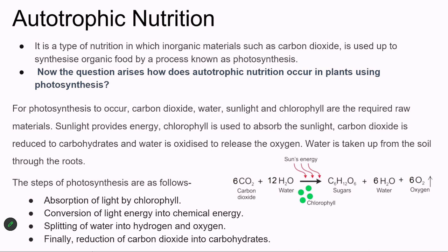When all these are present in the plant together, the photosynthesis process is carried out. First, chlorophyll absorbs light and converts light energy into chemical energy. Then water is broken down into hydrogen and oxygen. This hydrogen combines with carbon dioxide to form carbohydrates — simple sugars — which contain carbon, hydrogen, and oxygen, forming the organic food material.